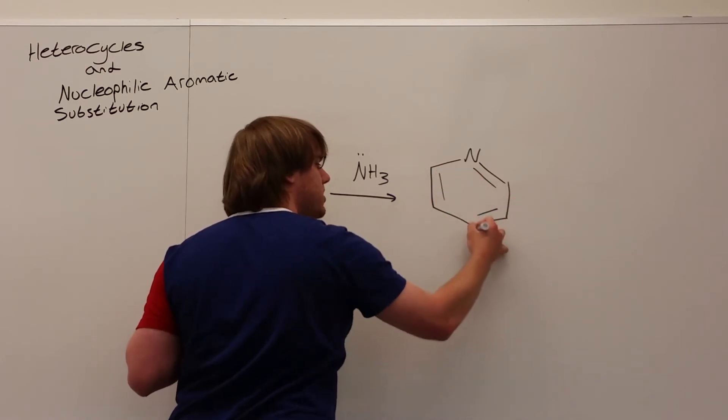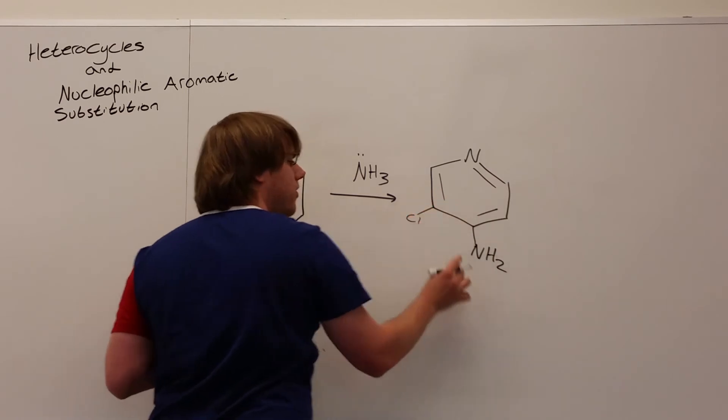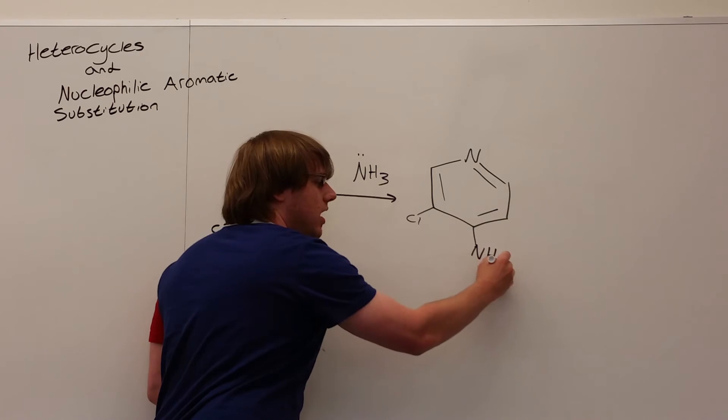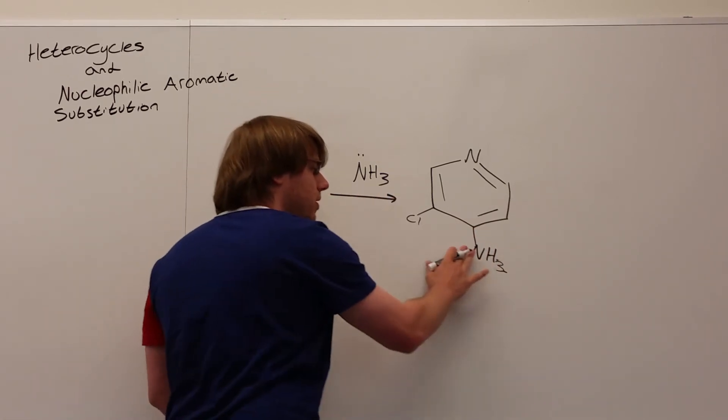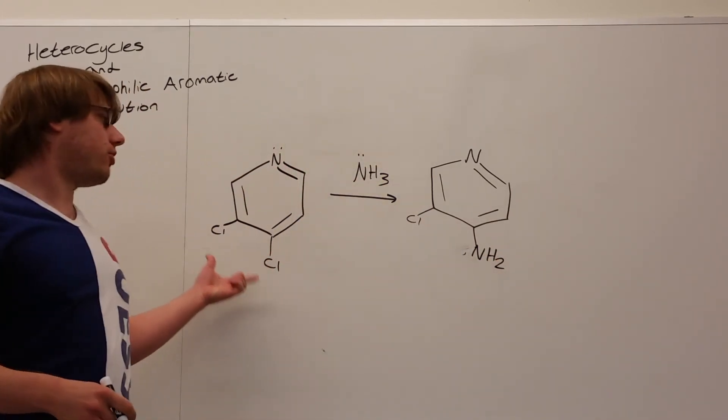It would replace the one on the bottom in the para position. And so you would expect to have this as your answer. Now I wrote NH2 instead of NH3 because if it was NH3 it would be NH3 positive and it would just end up getting deprotonated to NH2. But just for completion's sake, let's actually draw out the mechanism of how we get from this to this.